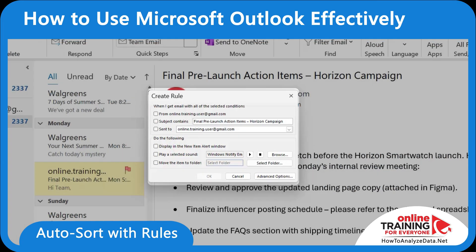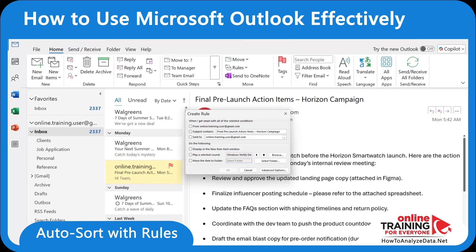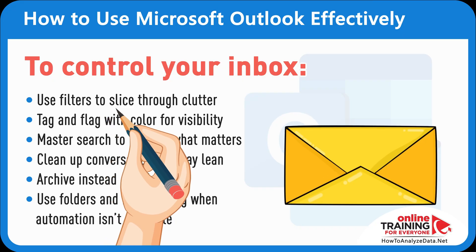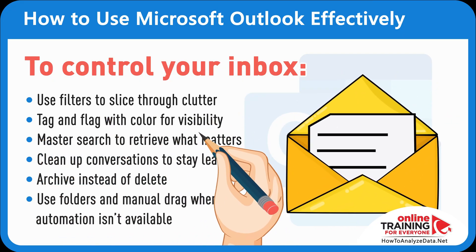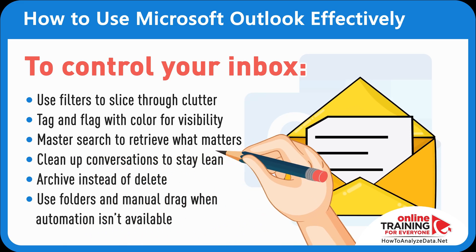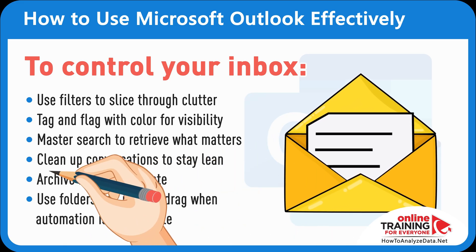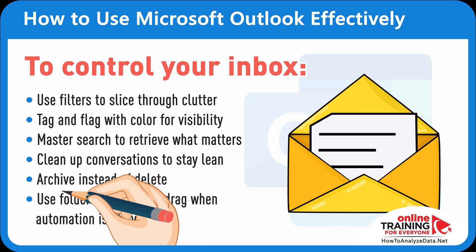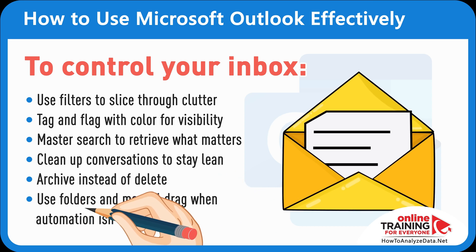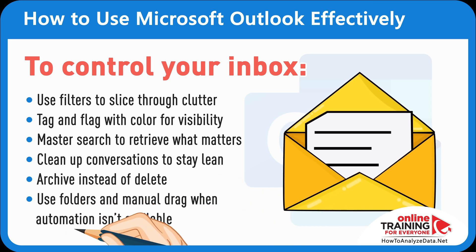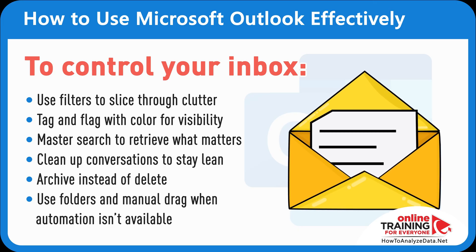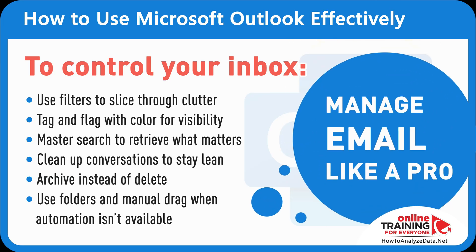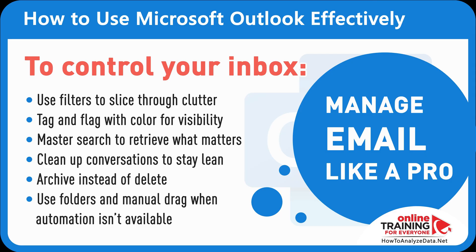Learning rules to auto-sort is like hiring a free assistant for your inbox. To control your inbox: use filters to slice through clutter, tag and flag with color for visibility, master search to retrieve what matters, clean up conversations to stay lean, archive instead of delete, and use folders and manual drag when automation isn't available. Take just a few minutes a day to try one or two of these tips and start managing your emails like a pro.